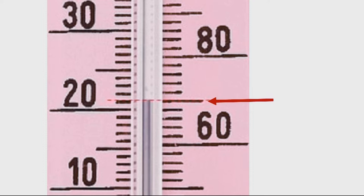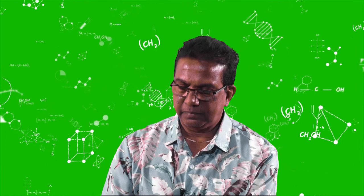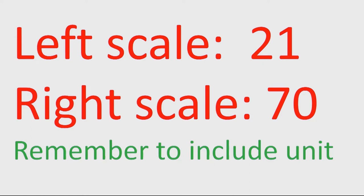I have here part of a thermometer with two different scales, of course, with two different units. And I would like you to read the value which is being shown by the red arrow. There are two different scales, one on the left and one on the right. It is part of a thermometer. What value is being shown on the left? And what value is being shown on the right? Study it.